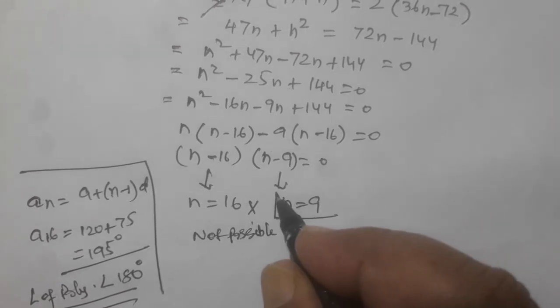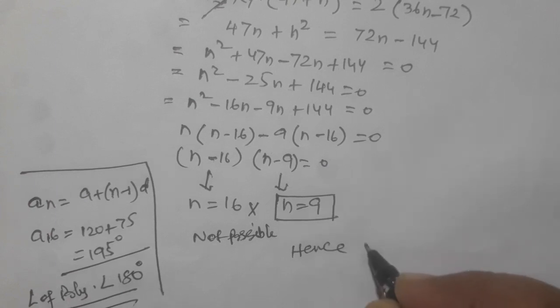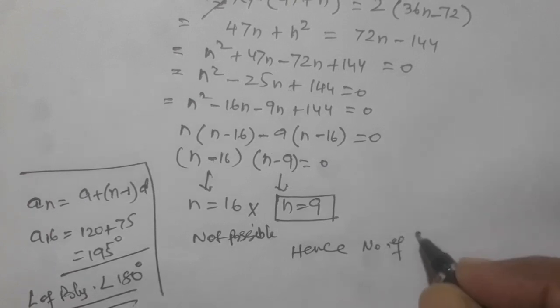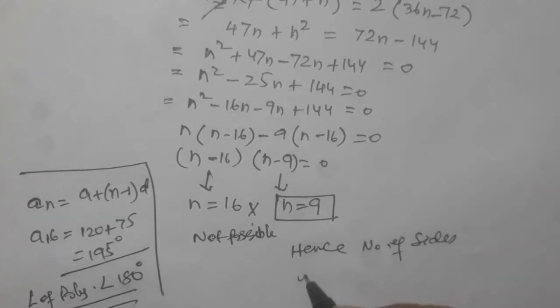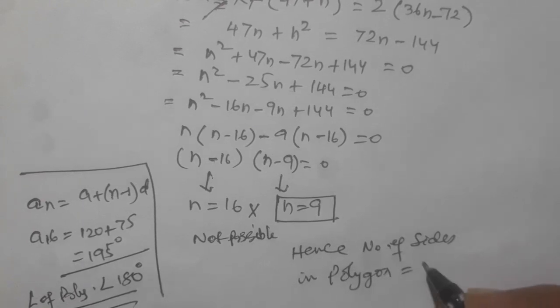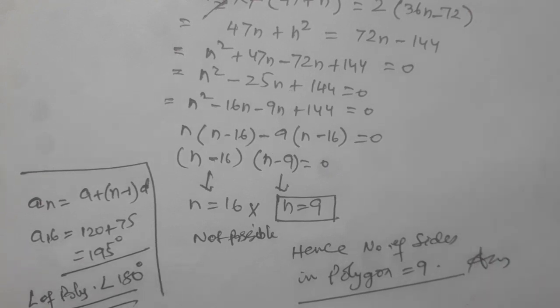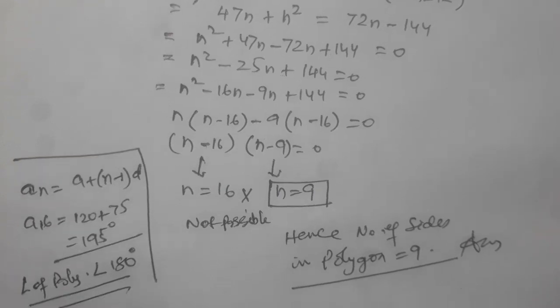So our answer will be N equals 9. Hence, number of sides in the polygon equals 9. This is our answer. I hope you will please like, share and subscribe this channel. If you have any doubt, please write in the comment box. I will reply. Thanks.